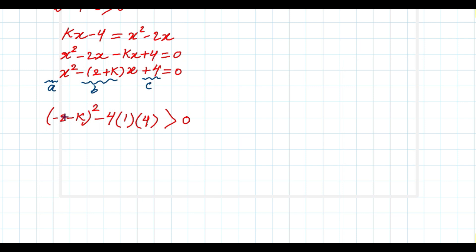We can open this square bracket: negative 2 squared is positive 4, then 2 times negative 2 times negative k becomes positive 4k. Negative k squared is positive k squared. Then minus 4 times 1 is 4, times 4 is 16.